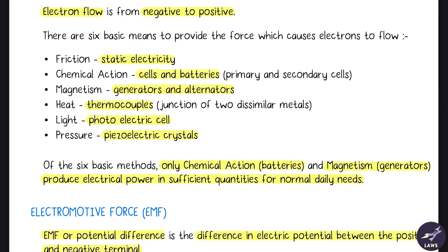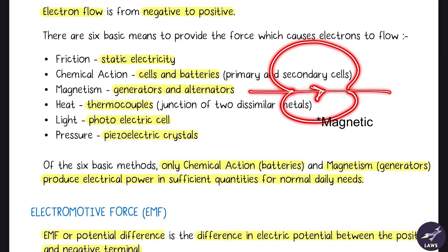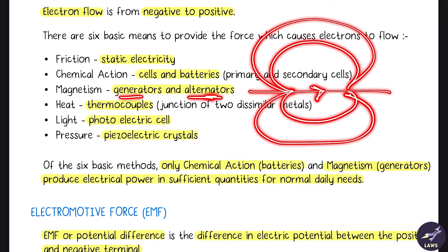We also have magnetism. Whenever current flows through a conductor, an electric field is generated around it. Generators and alternators make use of this to generate electric current.